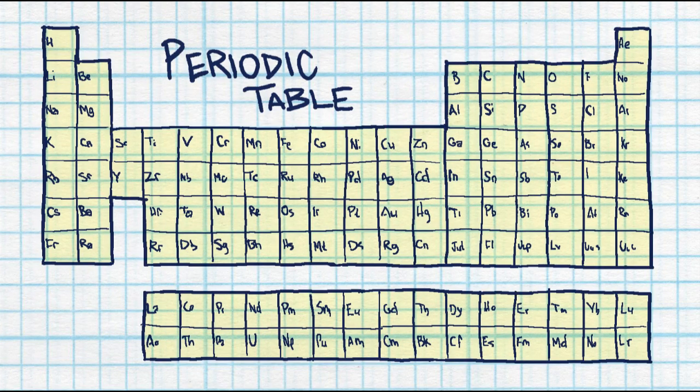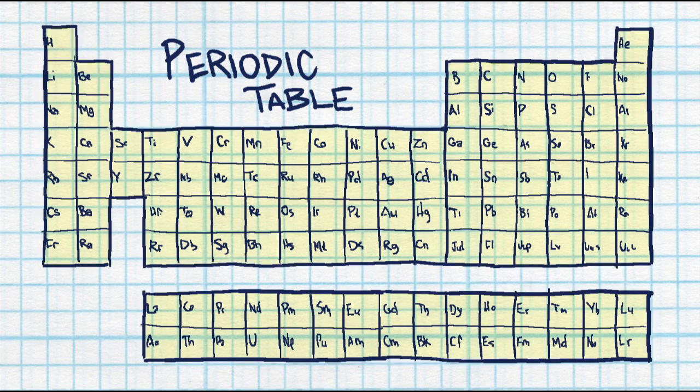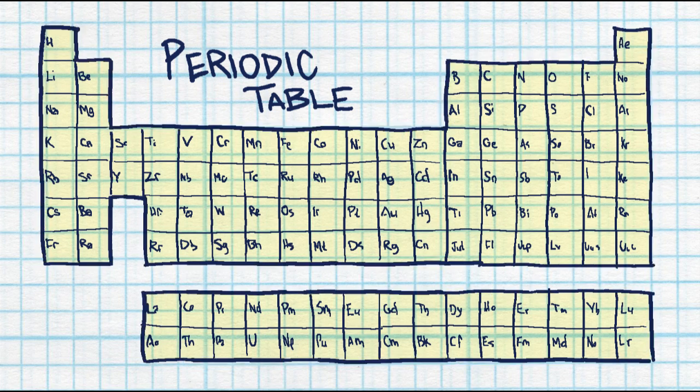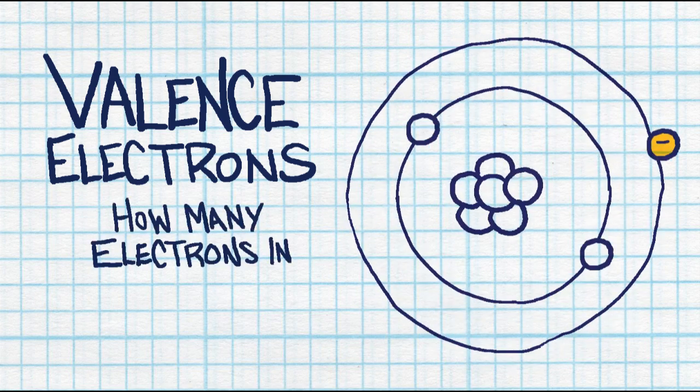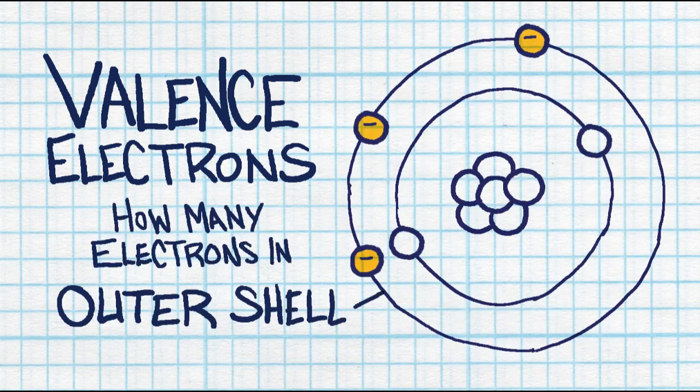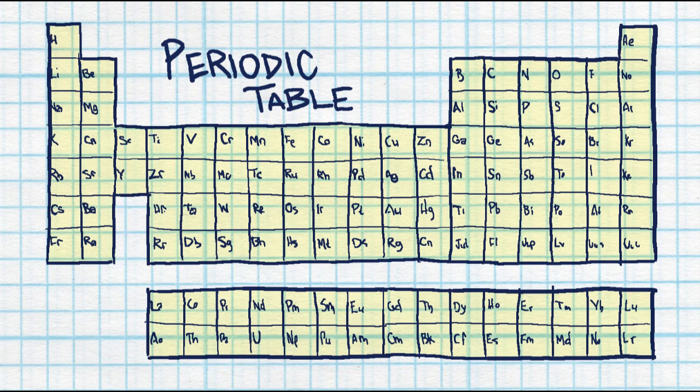On the periodic table of elements, you can also find other information besides atomic number. You can find out how many valence electrons there are, which is the amount of electrons in the outer shell, simply by counting over the group number.